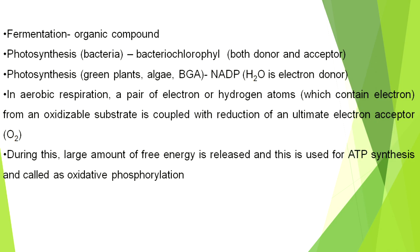In aerobic respiration, a pair of electrons or hydrogen atoms containing electrons from an oxidizable substrate is coupled with the reduction of the ultimate electron acceptor — that means oxygen. During this process, a large amount of free energy is released and is used for ATP synthesis, called oxidative phosphorylation. ATP means adenosine triphosphate. ATP synthase involves the transfer of electrons from the intermembrane space through the inner membrane back to the matrix.